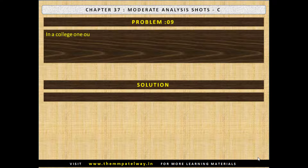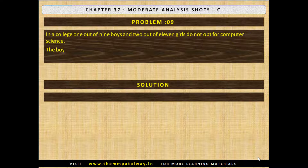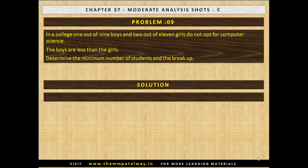Problem No. 9. In a college, one out of nine boys and two out of eleven girls do not opt for computer science. The boys are less than the girls. Determine the minimum number of students and the breakdown. The solution is there are 27 boys and 33 girls.